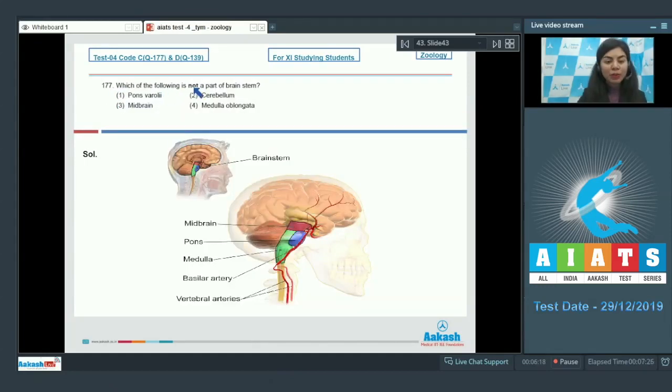Question 177: Which of the following is not a part of brain stem? Options are pons varuli, cerebellum, midbrain, or medulla oblongata. The brain stem is formed by three major regions: midbrain, pons, and medulla oblongata. So out of the given options, the part which is not a part of brain stem would be option number 2, cerebellum.